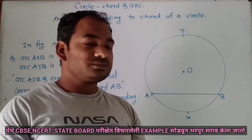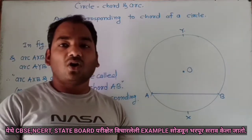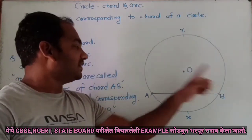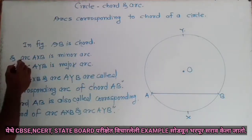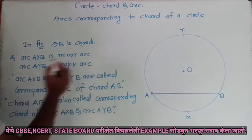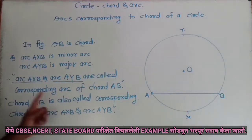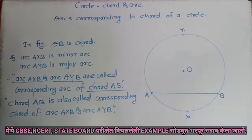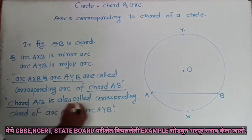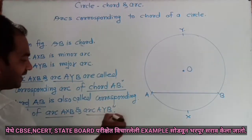We can also say that chord AB is the corresponding chord of arc AYB and arc AXB. Arc AXB is a minor arc and arc AYB is a major arc. So arc AXB and arc AYB are called corresponding arcs of chord AB. In other words, chord AB is the corresponding chord of arc AXB and arc AYB.